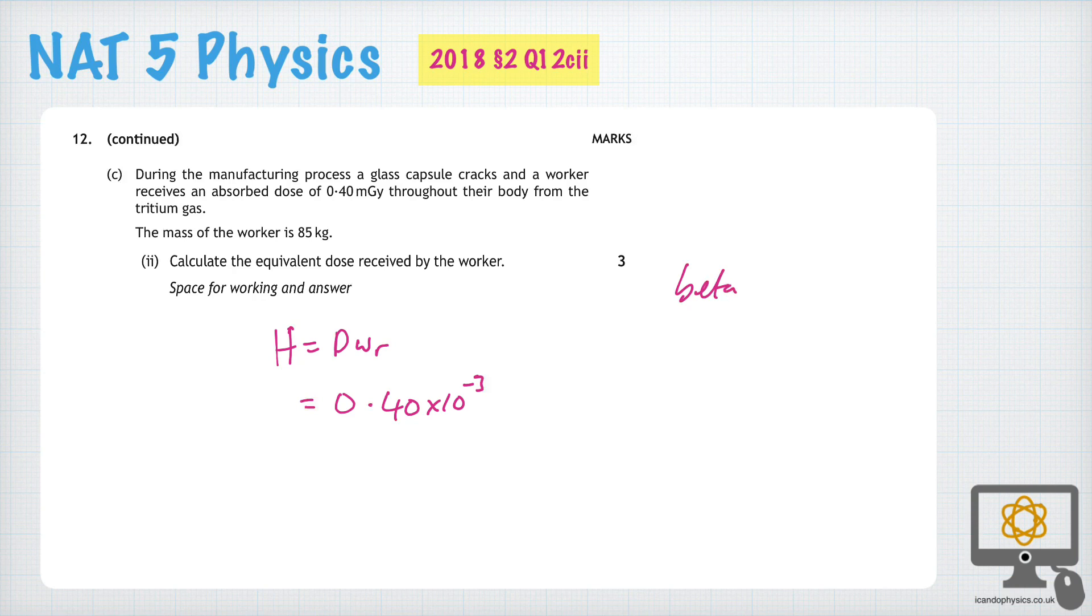And so if we look up beta particles in the data sheet at the front of the exam paper, we find that they have a radiation weighting factor of 1.